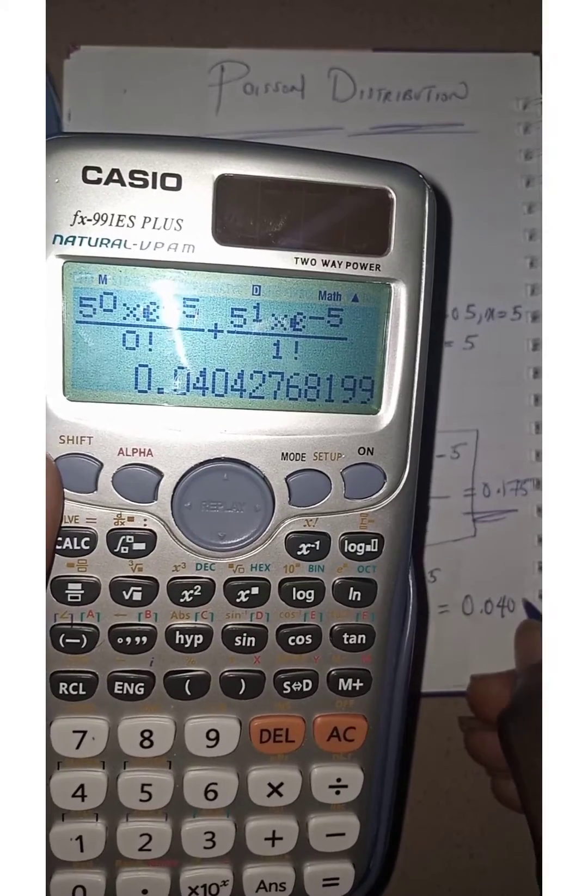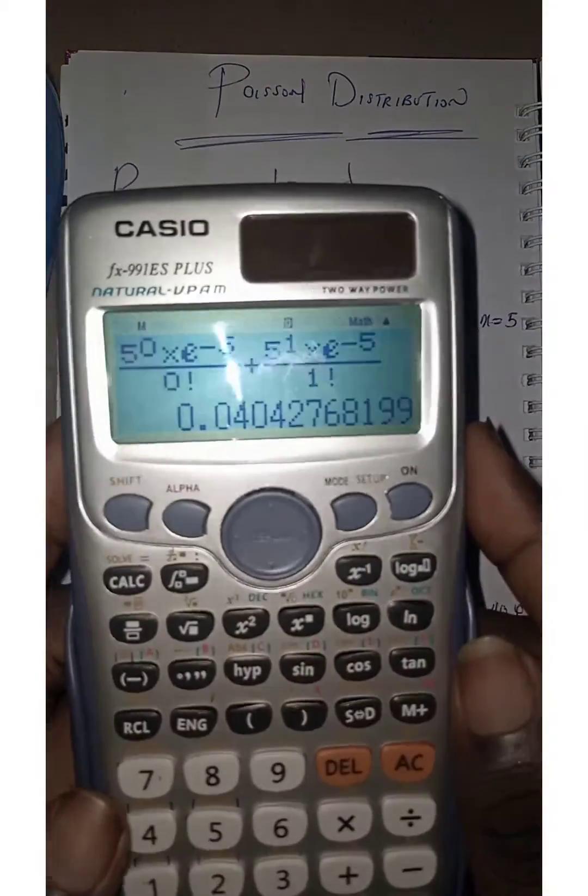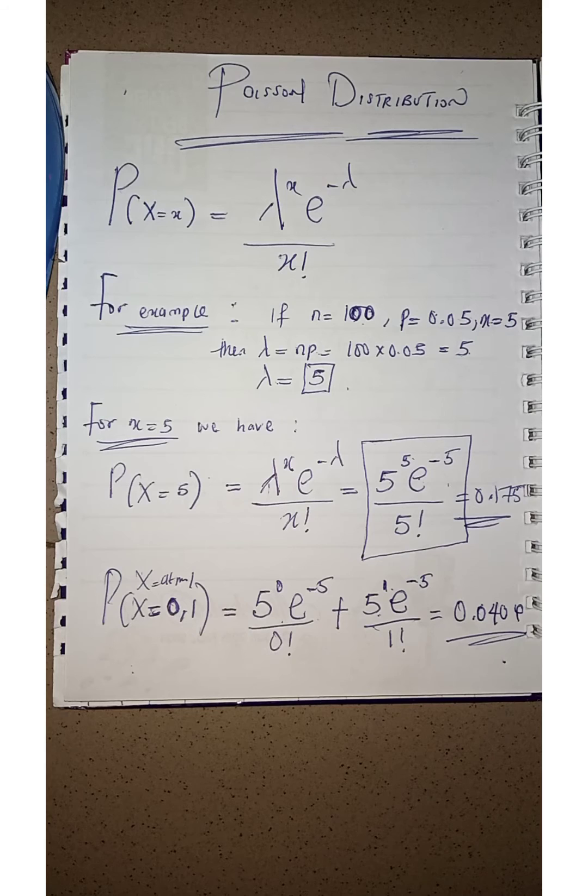That gives us 0.404. So this gives you the result. So this is how to work with naturalized display to solve some questions based on Poisson distribution. Thank you very much.